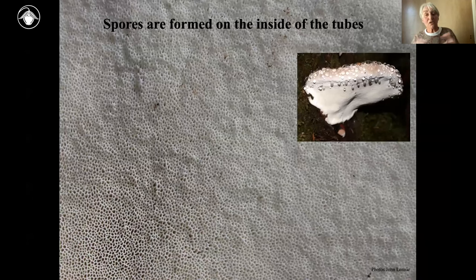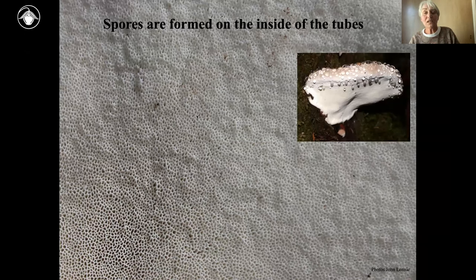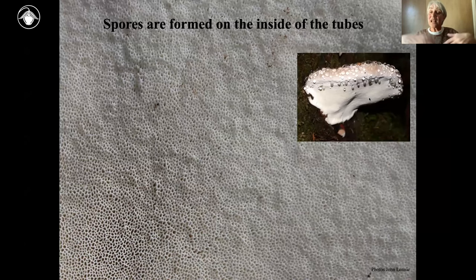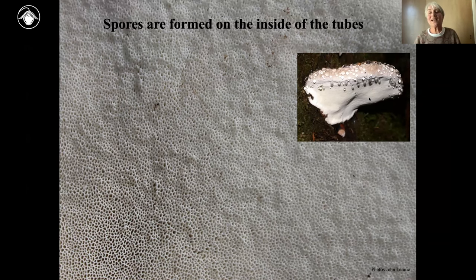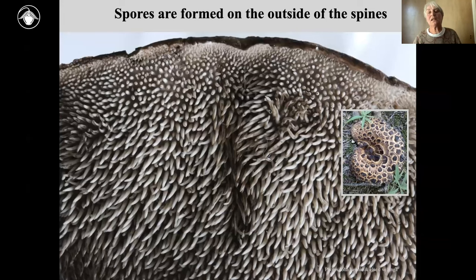There are also mushrooms called conchs that are totally different — they have tubes lined with cells that produce the spores, and these tubes can be about a centimeter long. These fruit bodies are perennial, and they must grow such that the tubes are exactly vertical, otherwise the spores fall the wrong way and don't get out into the environment. The opposite of tubes is spines — again making more surface to produce more spores — giving the mushroom a much greater surface area on its underside.